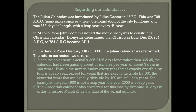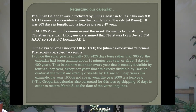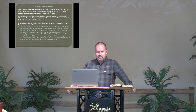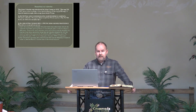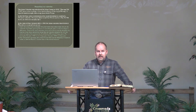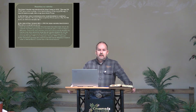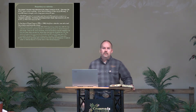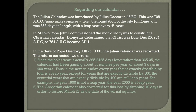In the Julian calendar, 1900 would have been a leap year, but in the Gregorian calendar it was not. The Gregorian calendar also corrected for accumulated drift by skipping 10 days at that time in order to restore March 21 as the date of the vernal equinox — the first day of spring.